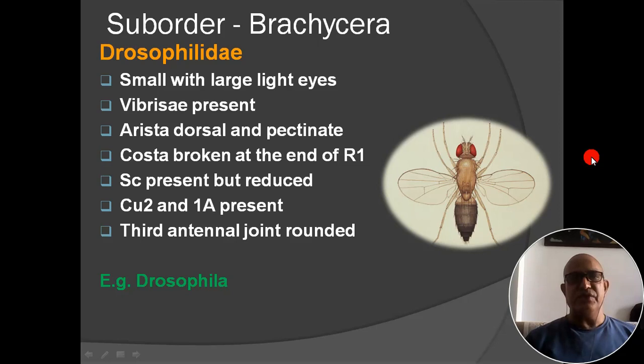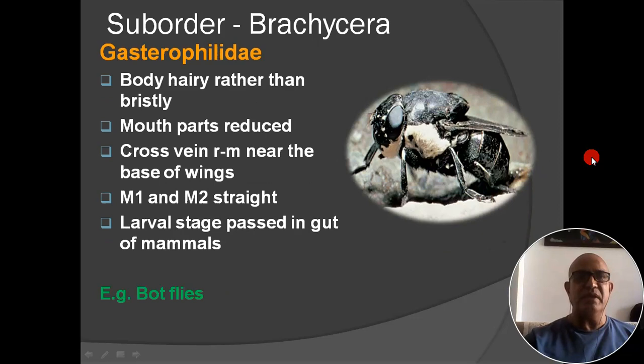Next family: Drosophilidae. Small with large red eyes; vibrissae present; arista dorsal and pectinate; costa broken at end of R1; subcosta present but reduced; cubitus second and first anal present; third antennal joint rounded. Example: Drosophila — also commonly used as experimental material in genetics.